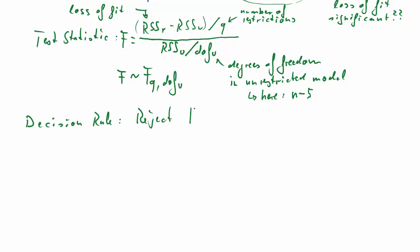So the decision rule is as follows. Reject H0 if the F-test is larger than a critical value coming from that F-distribution.